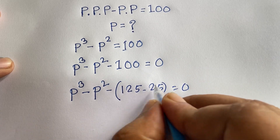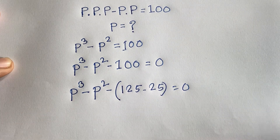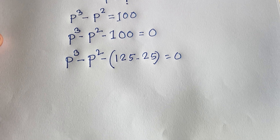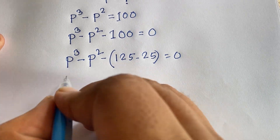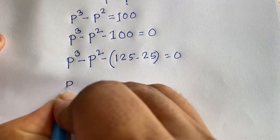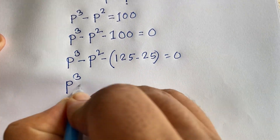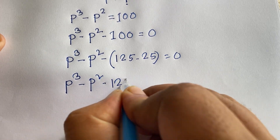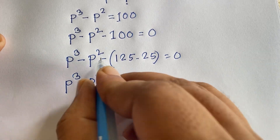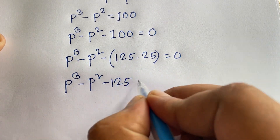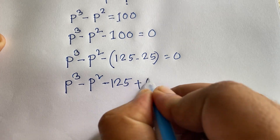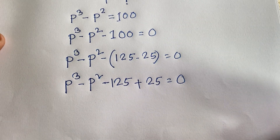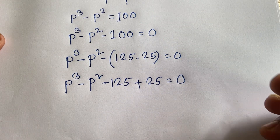Look, 125 minus 25 equals 100. So I can say here is P to the power 3 minus P squared minus 125 plus 25 is equal to 0. I solve this question step by step.